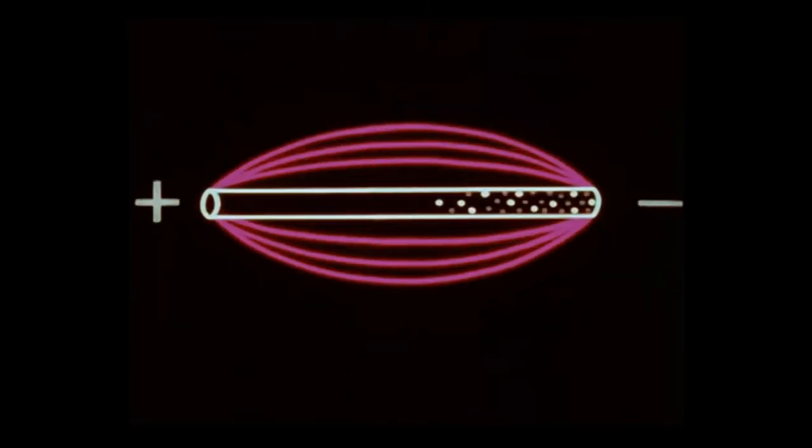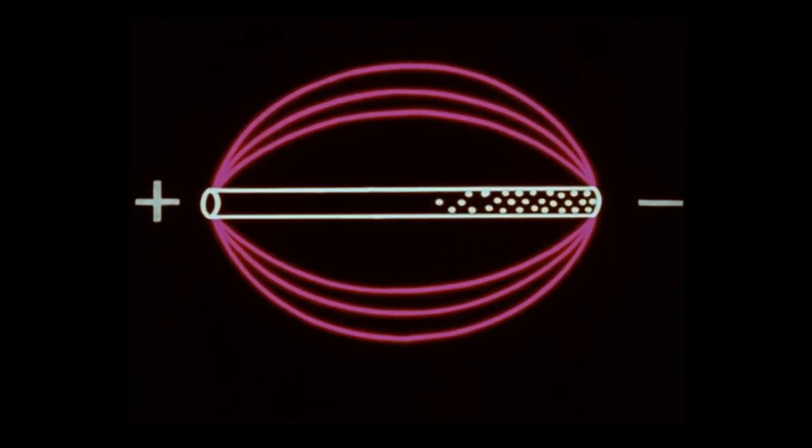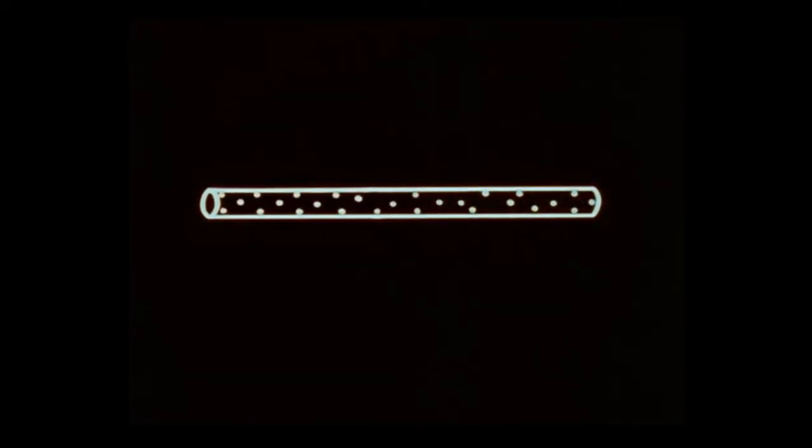When the polarity reverses, the field builds to a maximum in the opposite direction. This is known as the E field.